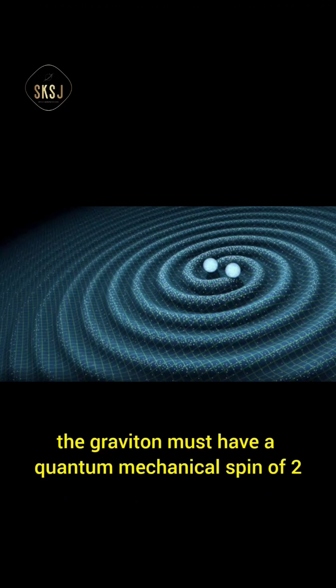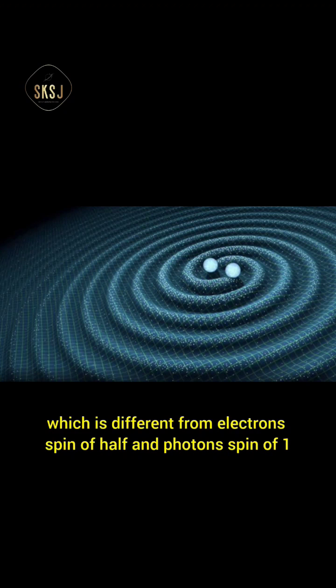To be only an attractive force, the graviton must have a quantum mechanical spin of 2, which is different from electron's spin of half and photon's spin of 1.